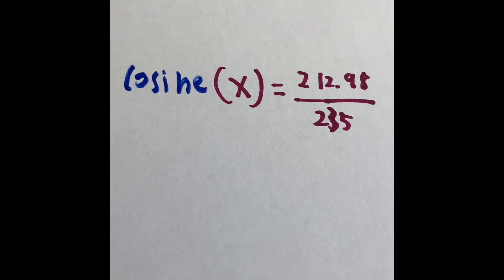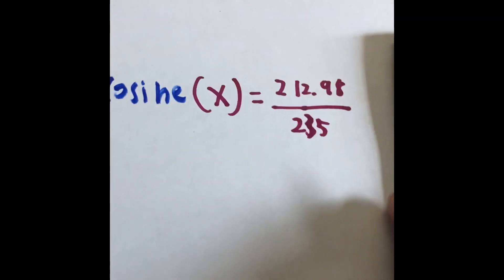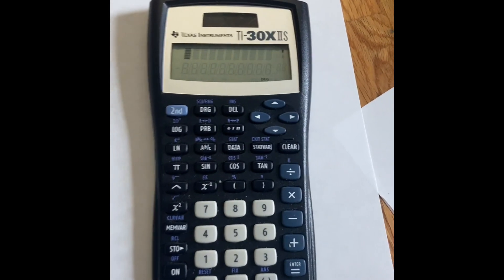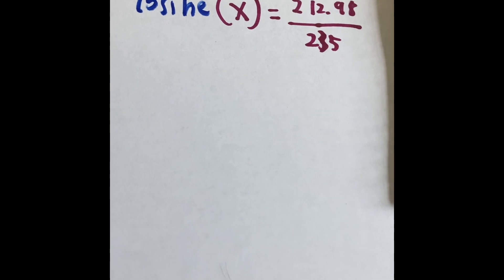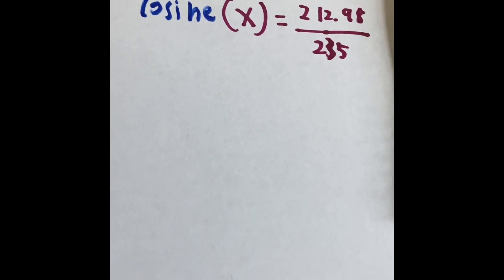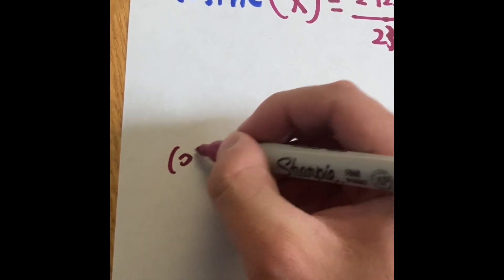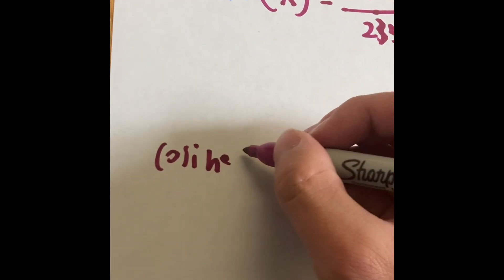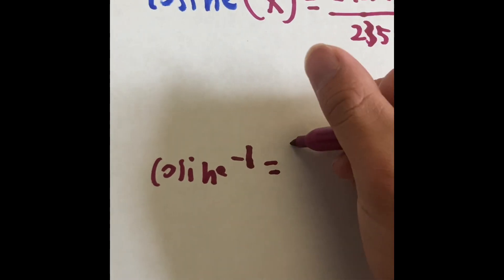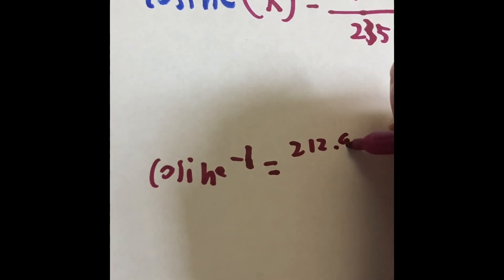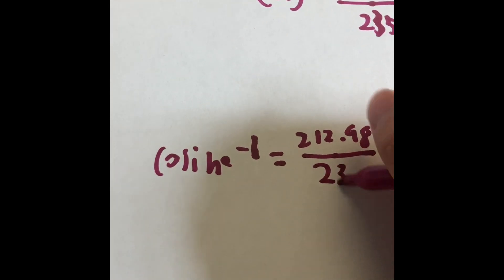Well, instead of solving it this way and getting stuck, this is where the calculator comes in. What we have to do is try to reverse the idea of what we're trying to do. So instead of the cosine of x, why can't we say the cosine of negative 1 is going to equal 212.98, divide that by 235.